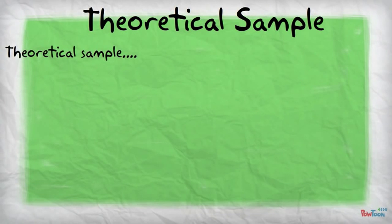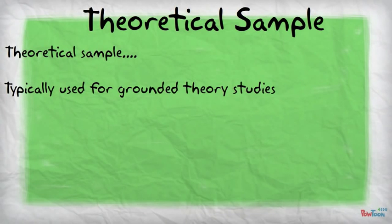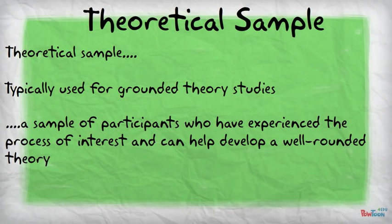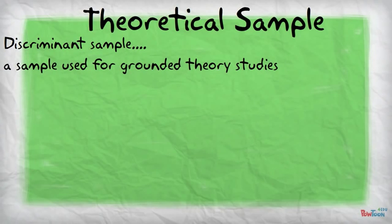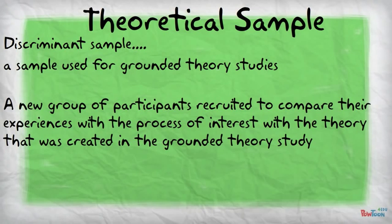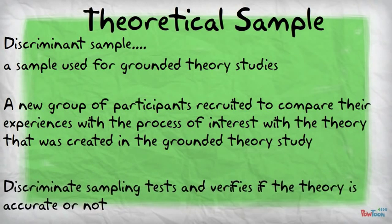And now let's talk about theoretical samples. A theoretical sample is most often used for grounded theory studies. It's a sample of participants who are recruited because they have experienced whatever process is of interest, and they can help to develop a very well-rounded theory. Within theoretical sampling is something called a discriminant sample, also usually for grounded theory studies. This is a new group of participants recruited to see if their experiences with the process of interest fall in line with the theory created in the grounded theory study, helping to test and verify that the newly created theory is accurate.